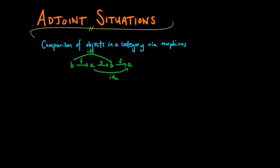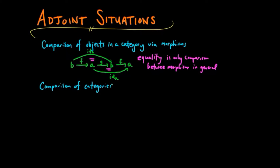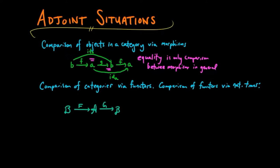In a category, diagrams either commute or they don't — there is no other relationship. In other words, equality is the only comparison between morphisms. On the other hand, comparisons of categories are done by functors, but we can also compare functors by natural transformations. So in a similar diagram, by replacing objects by categories and morphisms by functors, we have diagrams that may or may not commute, and we also have ways to transform functors.